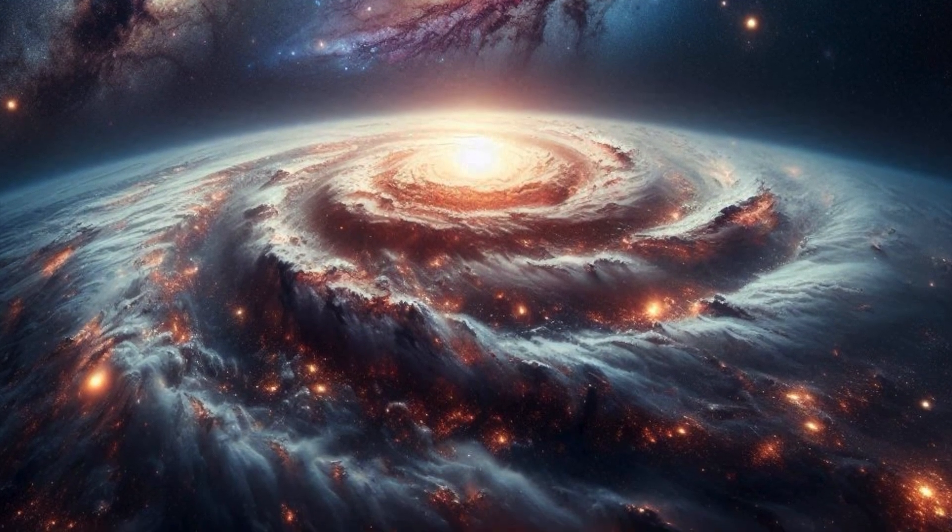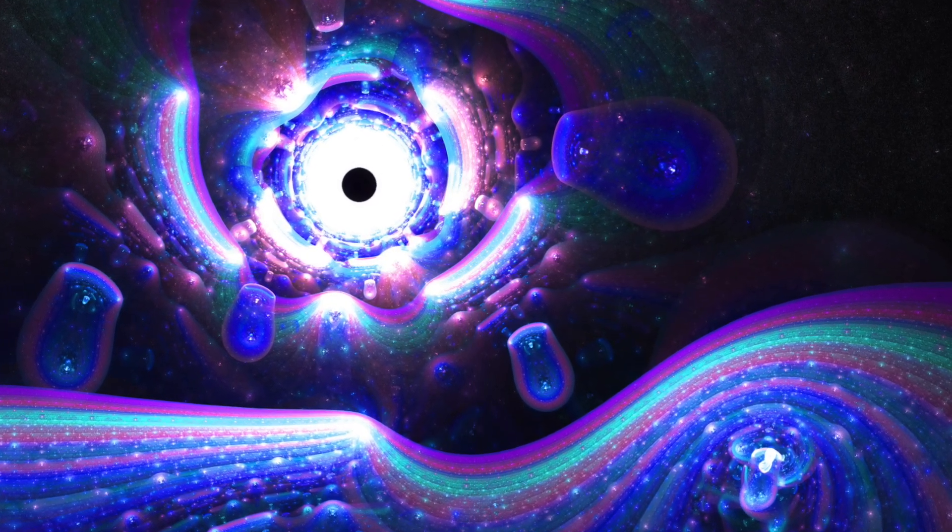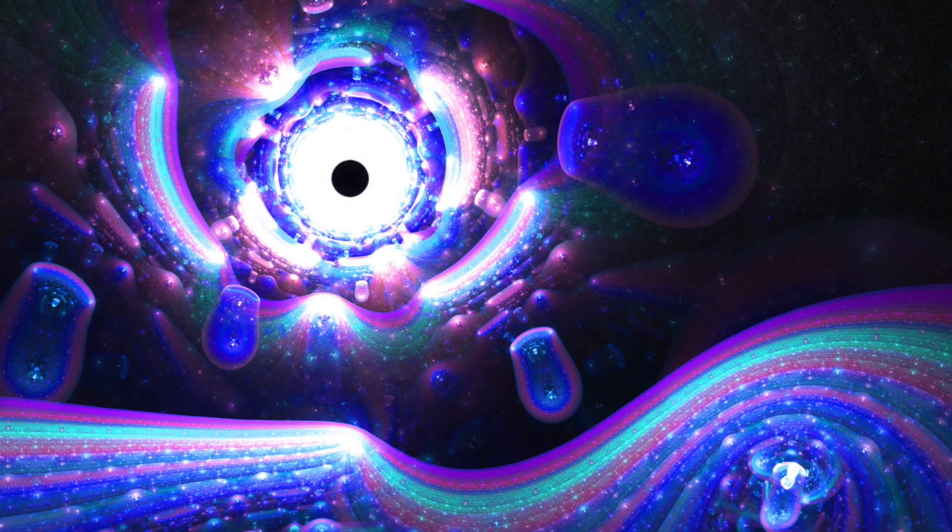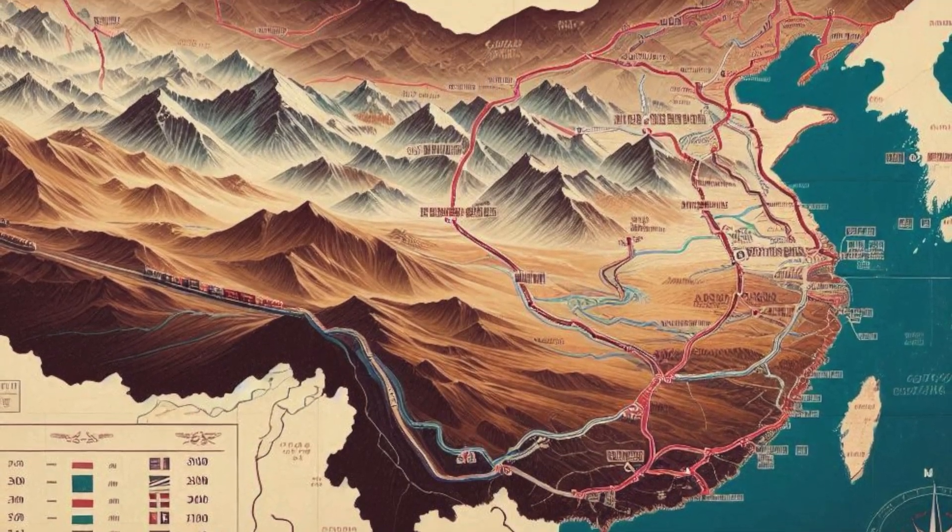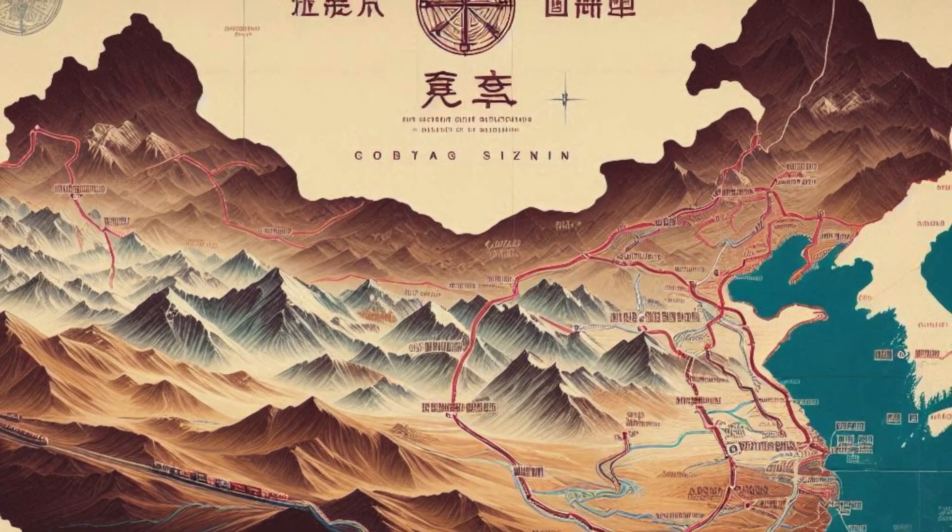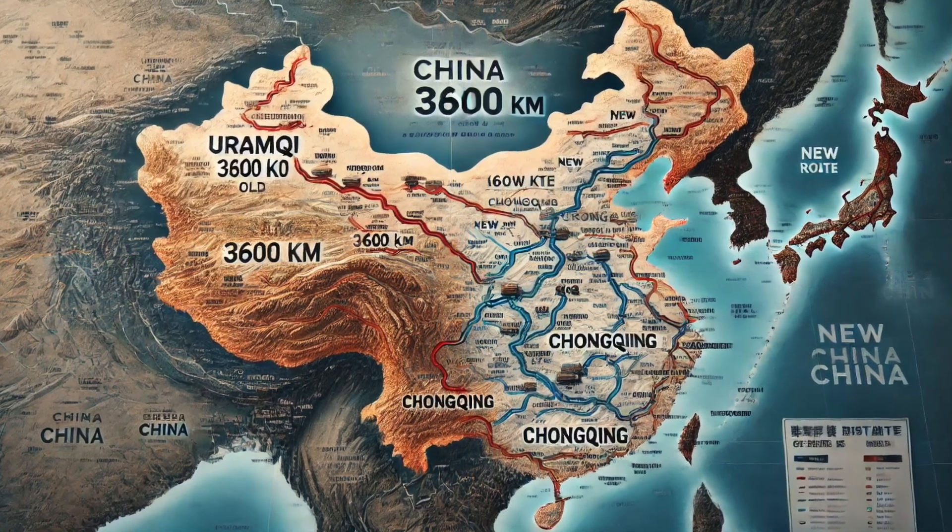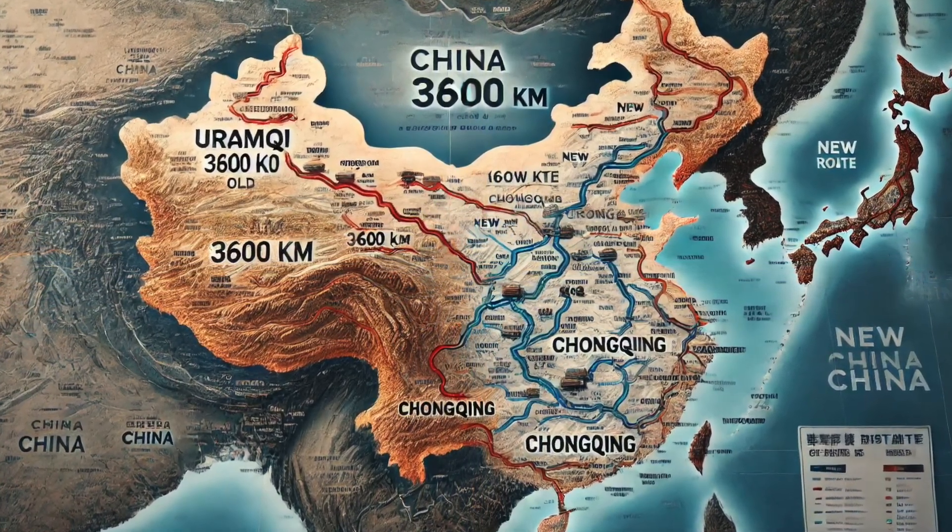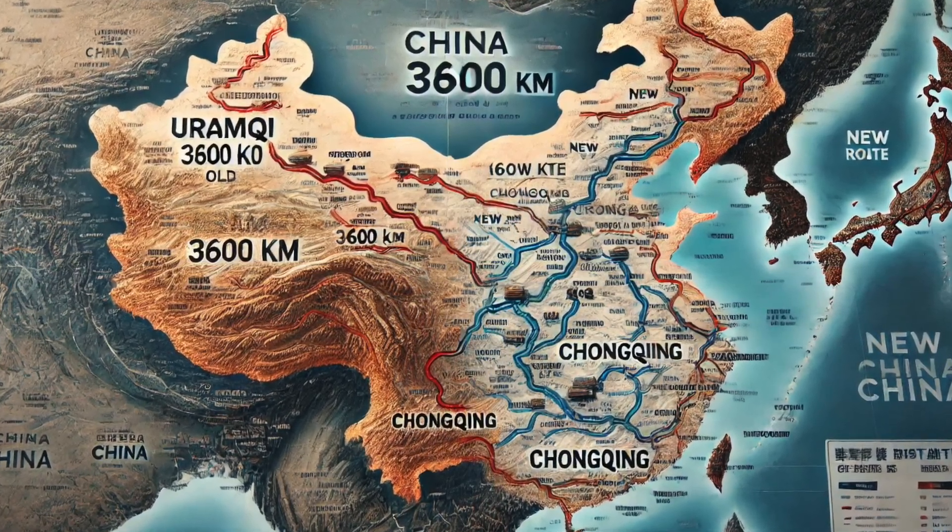We have seen similar concepts on Earth, such as the old 3,600-kilometer road between Chongqing and Urumqi in China, which took about 33 hours to traverse until a new railway was built in 2024, halving the distance to 1,600 kilometers and reducing travel time to 15 hours at the same speed. Wormholes operate in much the same way. They shorten the path rather than increase speed.